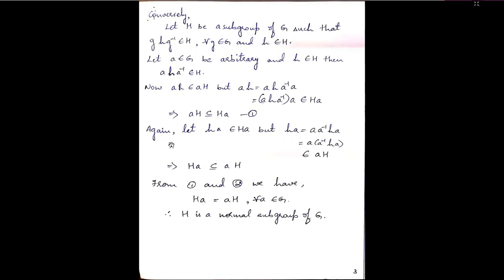Again under the same condition, let Ha belong to HA. But Ha equals aa⁻¹Ha, which we write as a(a⁻¹Ha), and this belongs to aH because a⁻¹Ha is again an element of H. So every element of HA is an element of aH, giving us HA is a subset of aH — this is the second statement. From these two statements, aH ⊆ HA and HA ⊆ aH, we conclude HA equals aH for all a belonging to G. Hence H is a normal subgroup of G.